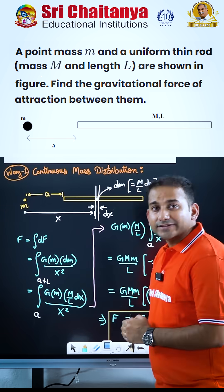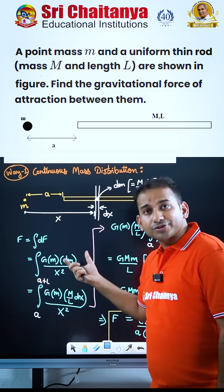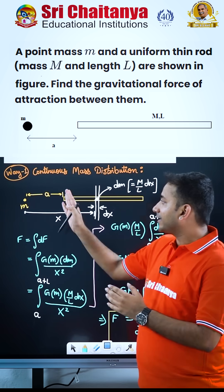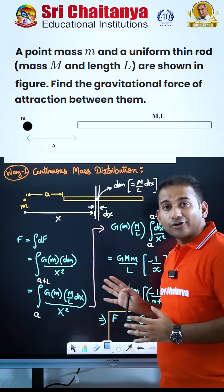One way of doing this problem is the continuous mass distribution model, in which we are supposed to take an element — a linear element over the rod.